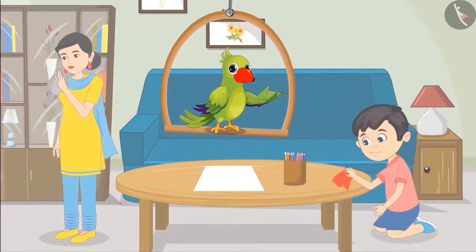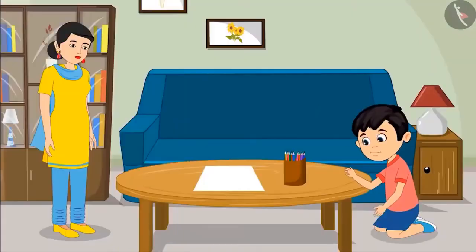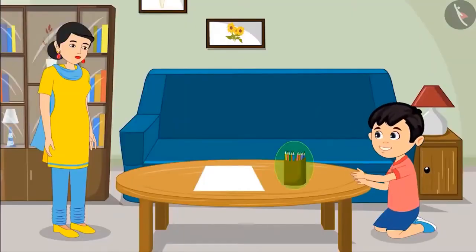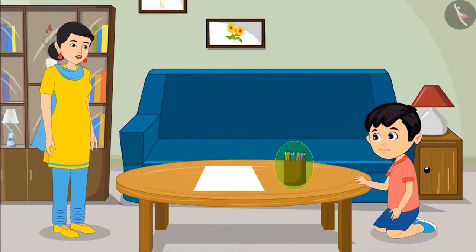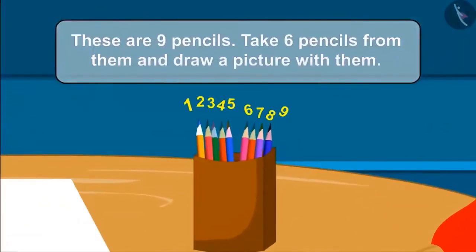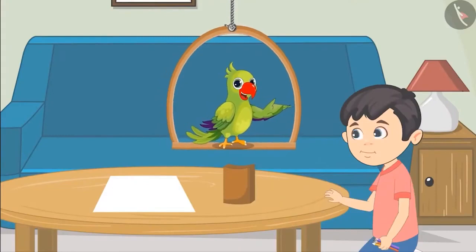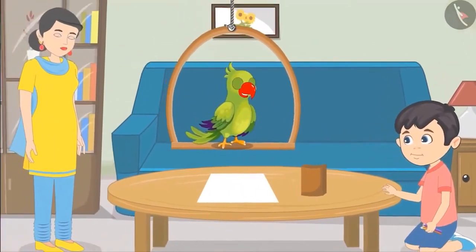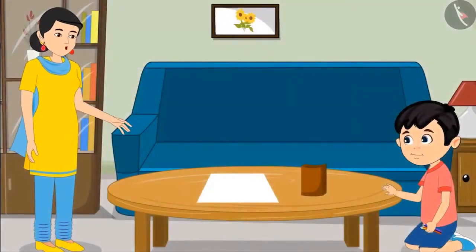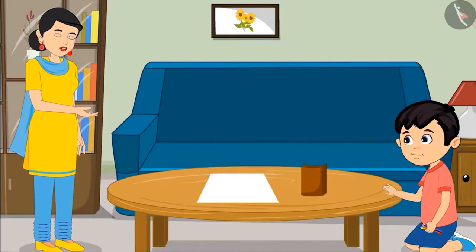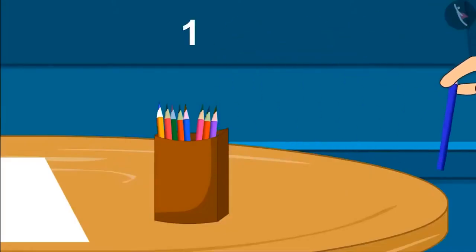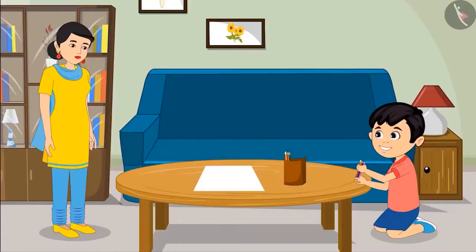While cleaning his room, Chotu finds a box of many colored pencils. There are nine pencils. The mother asks Chotu to take only six pencils to draw a picture. Chotu takes all the pencils. His mother corrects him: you have taken all the pencils — you have to take only six. Chotu counts out six: one, two, three, four, five and six. The mother confirms: yes, very good. Now make the drawing.